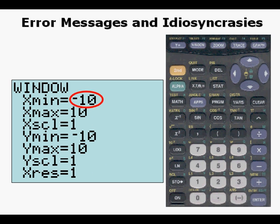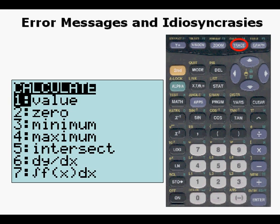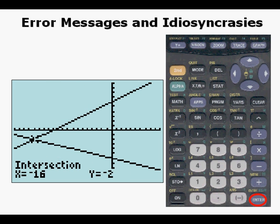So, we have to go back to the window and change our x minimum. In this case, we make it negative 20, and we graph it. We can see the point. We press 2nd, trace, 5, enter, enter, enter, and we do get an intersection of negative 16 comma negative 2.